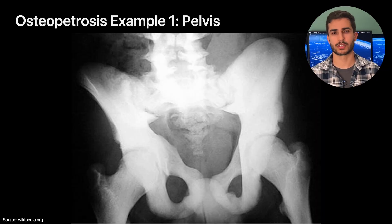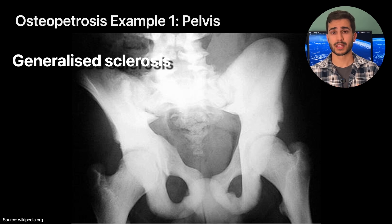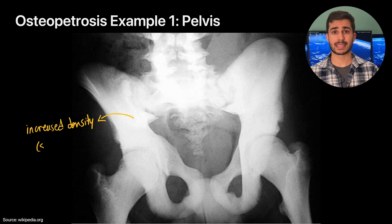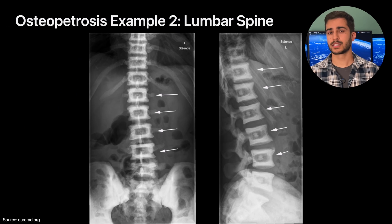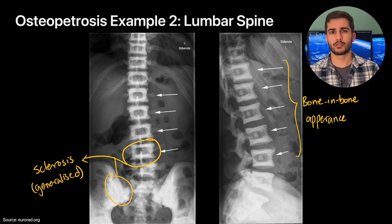Here's an example of what osteopetrosis looks like — immediately you can tell there's a major difference from a normal pelvis x-ray. The main radiographic features — generalised sclerosis, thickened cortices, and absent medullary cavity — are all visible here. There's increased bone density basically everywhere around the pelvis, hips, and lower lumbar spine, and the boundary between the cortex and medullary cavity is almost blurred. In the lumbar spine AP and lateral views, you can also see the bone-in-bone appearance, with arrows pointing to the hyperdense bone structure showing that sandwiching vertebra effect on both projections.